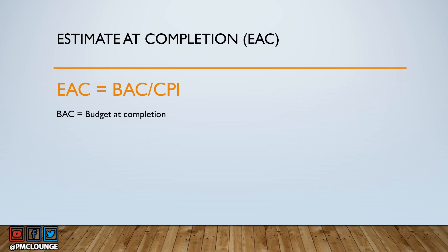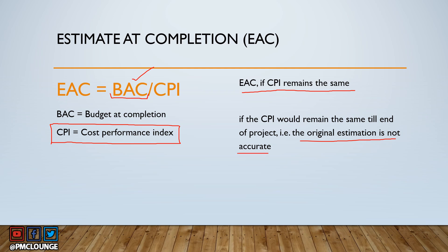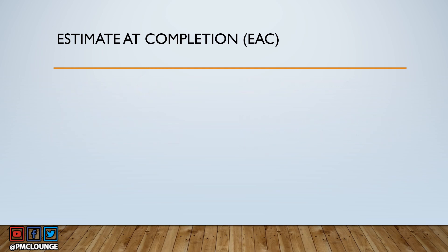Another EAC formula: EAC equals BAC divided by CPI, where BAC is Budget at Completion and CPI is the Cost Performance Index. Use this formula if the CPI remains the same through the end of the project — meaning the original estimation was not accurate and cost performance is expected to continue at the same rate.